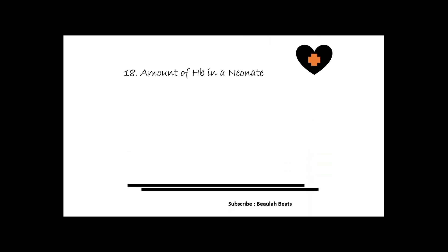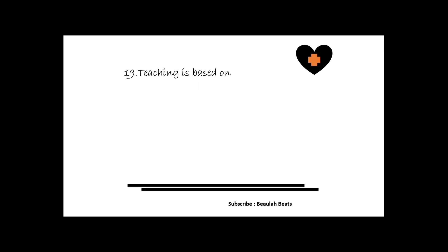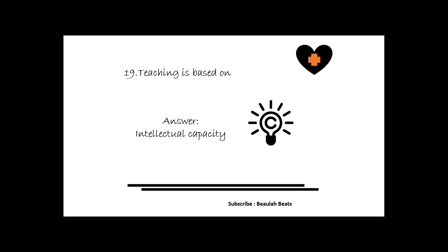The eighteenth question is: what is the amount of hemoglobin in a neonate? The answer is 16 to 18 grams, and this varies in preterm babies. The nineteenth question is: teaching is based on what? The answer is intellectual capacity.